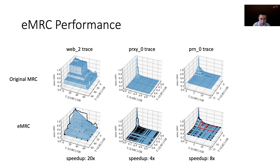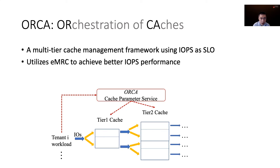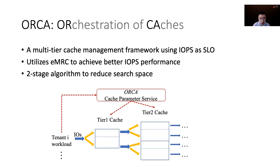Based on EMRC, we designed a multi-tier multi-tenant cache management framework called ORCA. ORCA uses IOPS as the service level objective and utilizes EMRC to achieve better IOPS performance. It also uses a lightweight two-stage algorithm to reduce the search space internally. A tenant sends an SLO to ORCA, ORCA uses EMRC to find the optimal cache configuration that results in minimal resource use, then configures each cache tier accordingly with specific size and partitioning parameters.